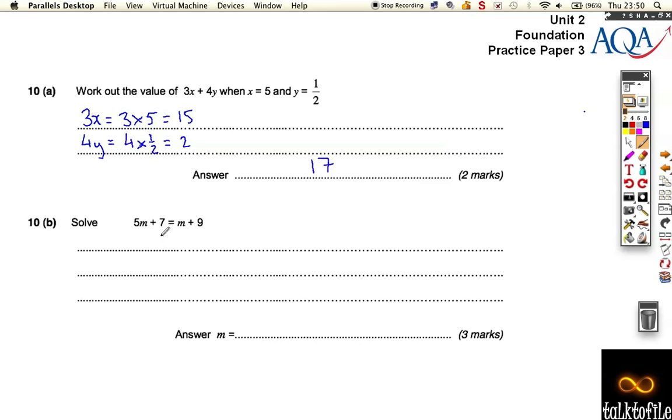So if you need to solve this equation, what you're going to have to do is take away m from both sides. Now, why am I taking away m from both sides? Well, over here we've got big brother, and here we've got little brother.